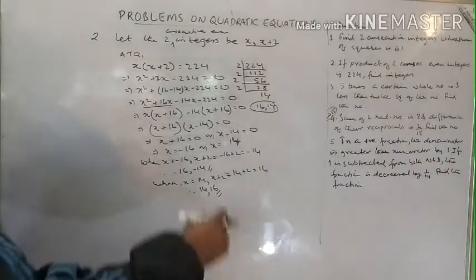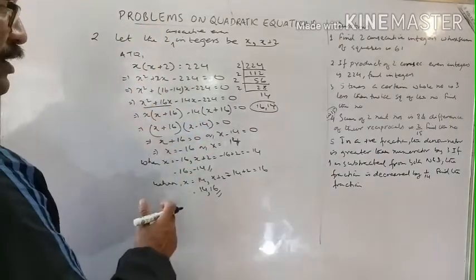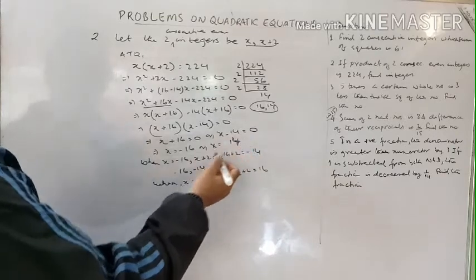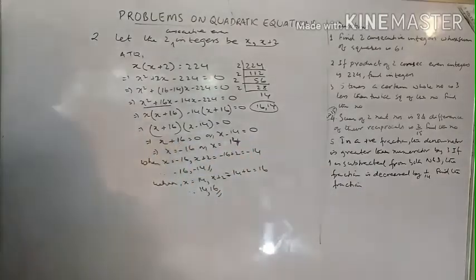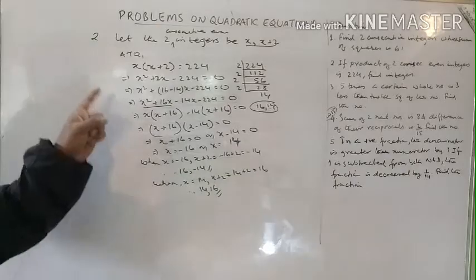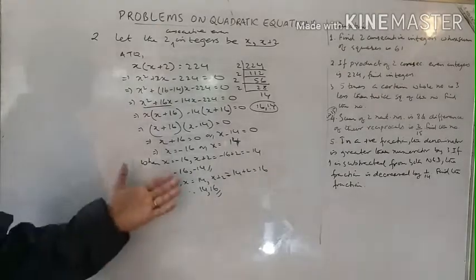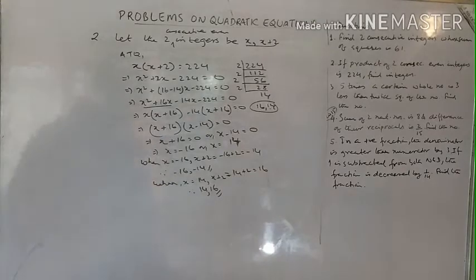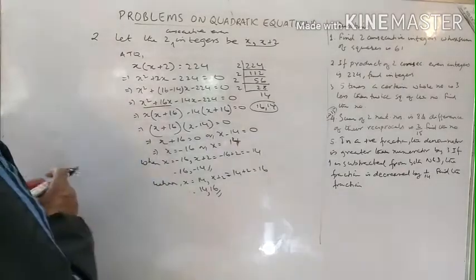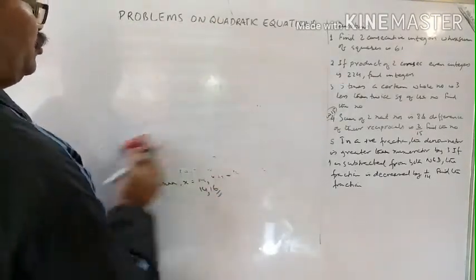If the question had said two consecutive positive even integers, then we would consider only x equals 14 and discard x equals minus 16. But since it just says consecutive even integers without specifying positive or negative, we consider both values of x.